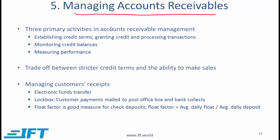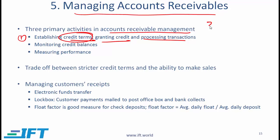Managing accounts receivables. There are three primary activities in accounts receivable management: first is establishing credit terms, granting credit to various customers, and then processing transactions. A company can offer multiple credit terms. An example would be 2/10, net 45. This means that customers need to pay back within 45 days, but the customer will get a 2% discount if they pay within 10 days.